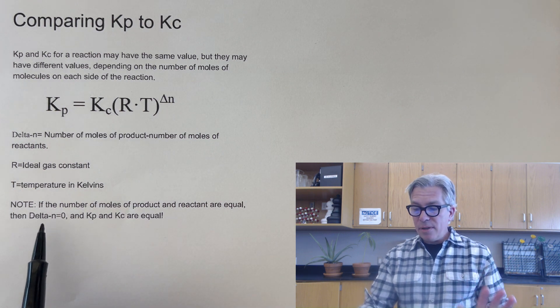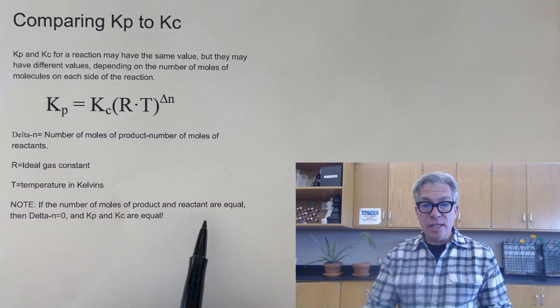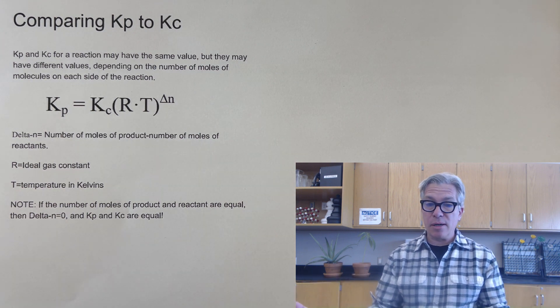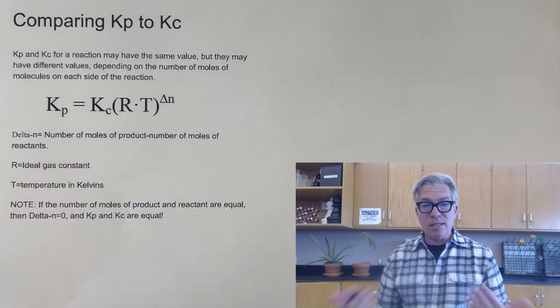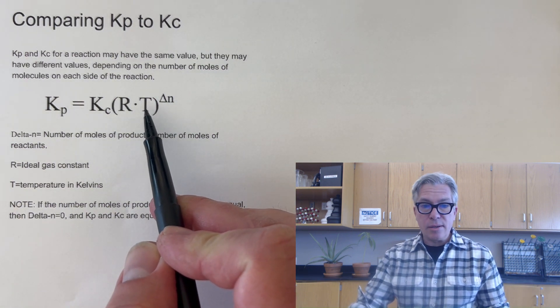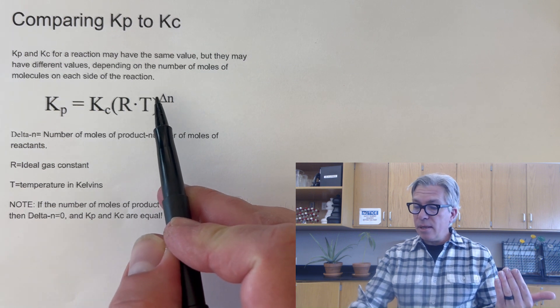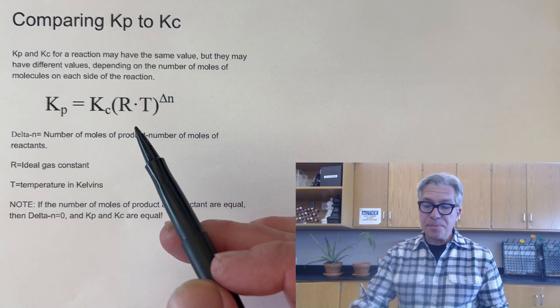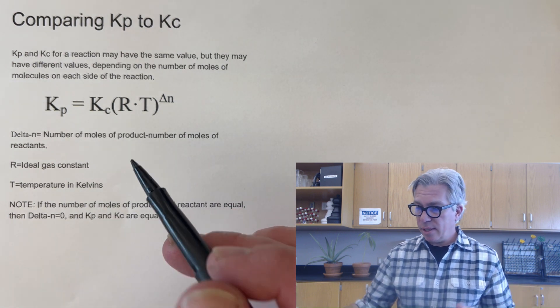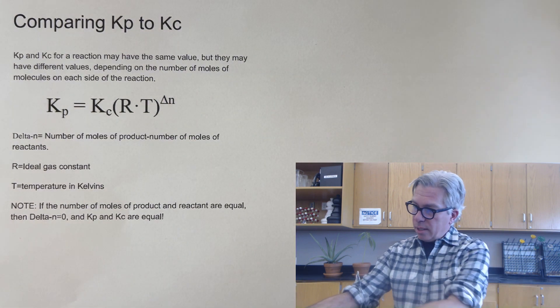Now note, if the number of moles of product and reactant are equal, for example, if two moles of reactants make two moles of gaseous product, then the delta n is going to be zero. This will be all just simplified to a one. Anything raised to the zero is one. And you'll just have Kp equal to Kc. But if the number of moles changes, then you have to do a quick little calculation. So let's get back to it.